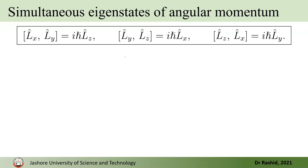Since Lx and Ly do not commute, we cannot measure them simultaneously. If you have measured Lx, you cannot know anything about Ly and Lz. No two components commute — and writing [Ly, Lx] gives minus iħ·Lz, confirming they do not commute.